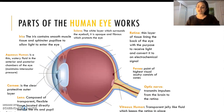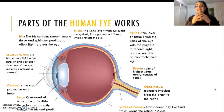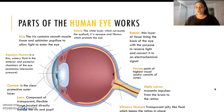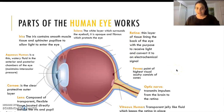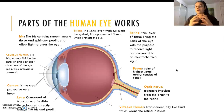We have the vitreous humor and the aqueous humor. The aqueous humor is a water-like fluid and this allows intraocular pressure to maintain. This also, with the sclera, helps it to maintain its shape. The vitreous humor is a transparent jelly-like fluid which keeps the retina in place. Our retina is a thin layer of tissue which lines the back of the eye with the purpose to receive light and convert this light into electrochemical energy or a signal.